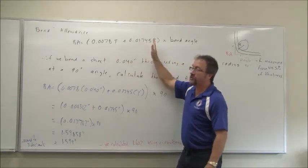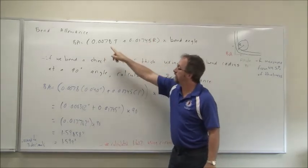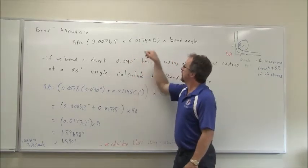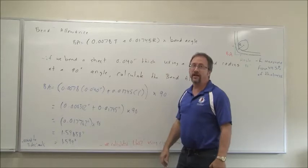Once we add those two values together, so calculate this one, calculate that one, add them together, take that sum and multiply it by the bend angle, 90 degrees.